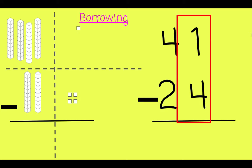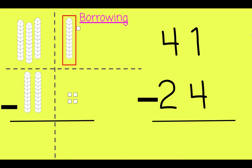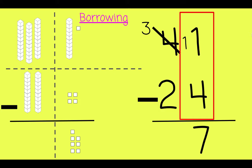Time to subtract. We can't take 4 away from 1 because 4 is greater than 1, so we need to borrow from the 10s column. Let's take this 10 rod and bring it over here. Same thing on the right. Good. Now we have 11 take away 4, which is 7.